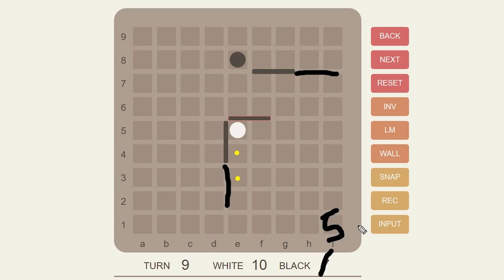It often leads to a situation like this with white having ten walls, black five, but black had better space control and white has more walls to mess up with black. So this kind of situation is rather interesting, but this is not what we're gonna see today.